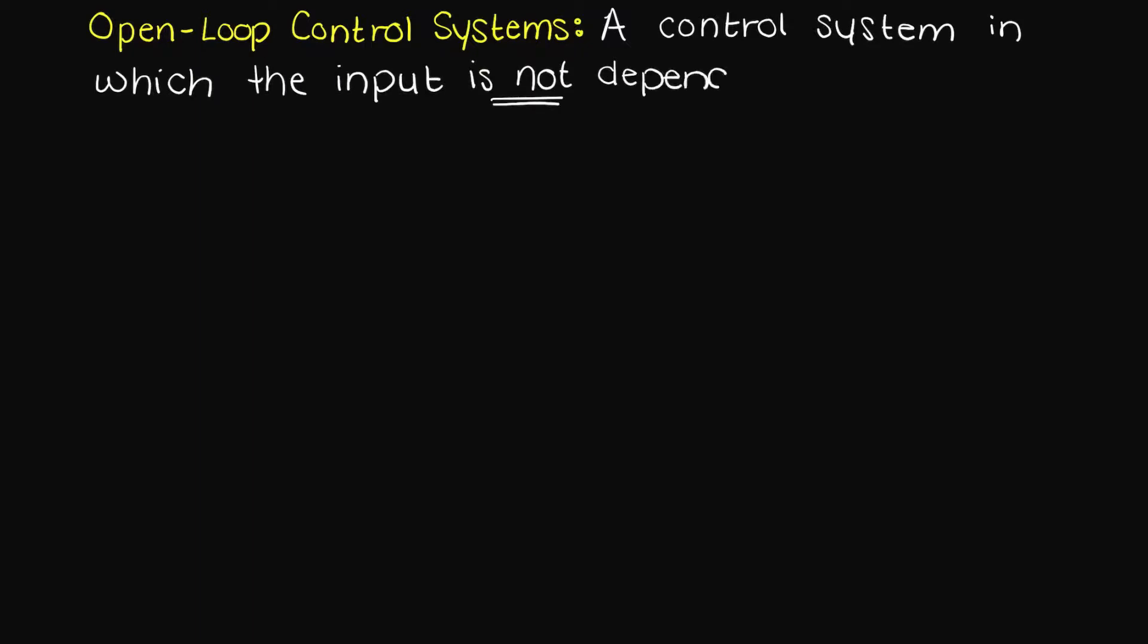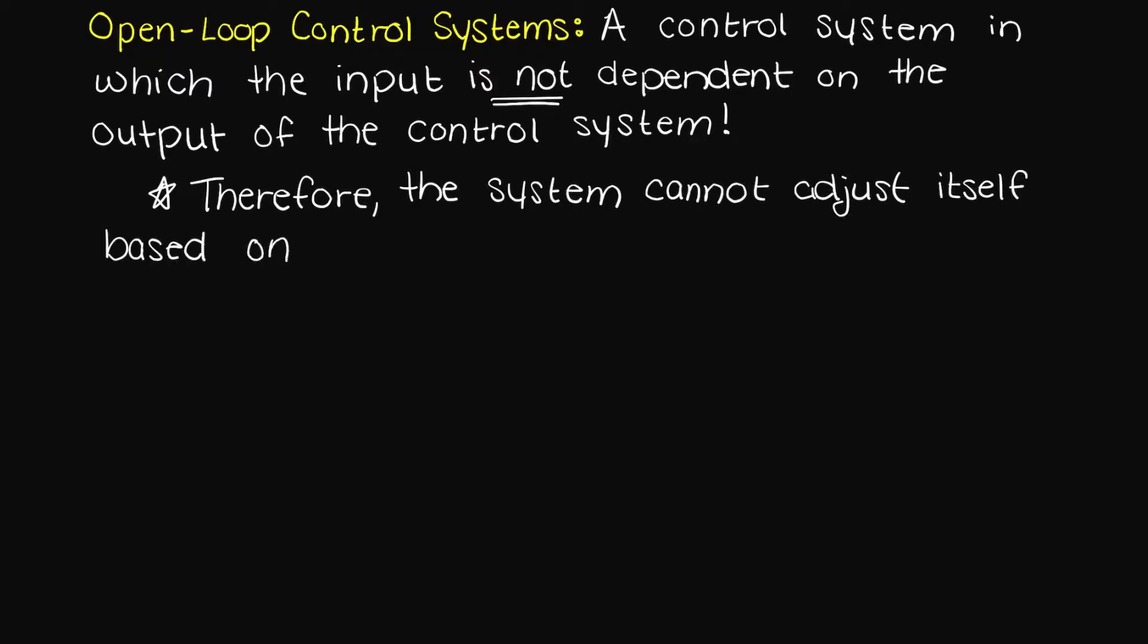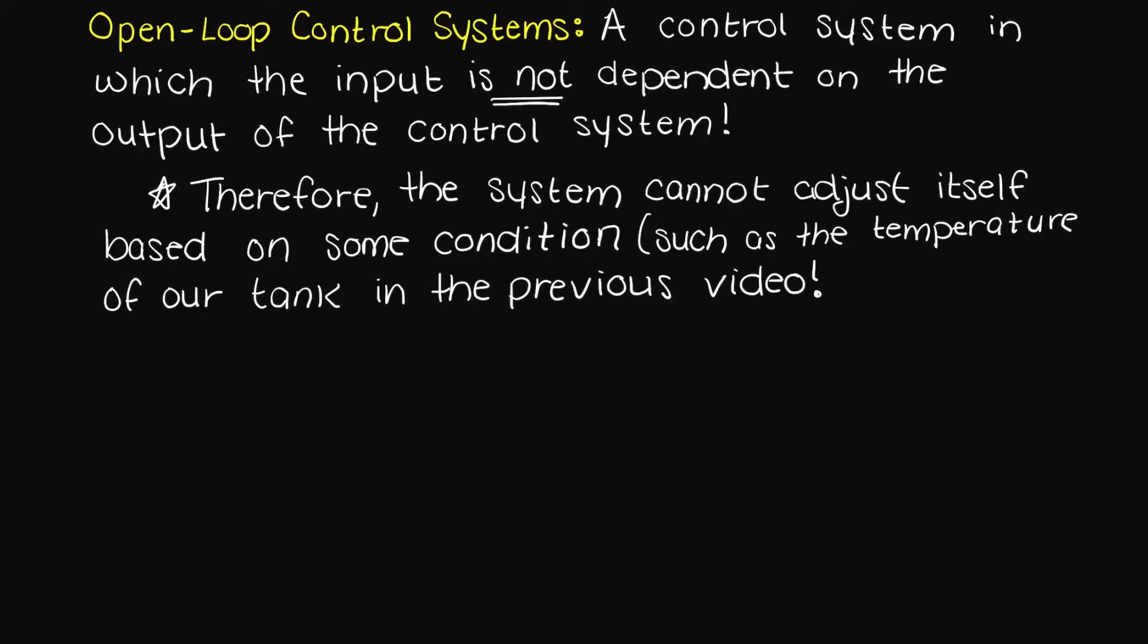An open loop control system means that the input of the control system is not dependent on the output of the control system. This means that our system cannot adjust itself based on some condition. We trigger some event and the system will operate for a given amount of time.